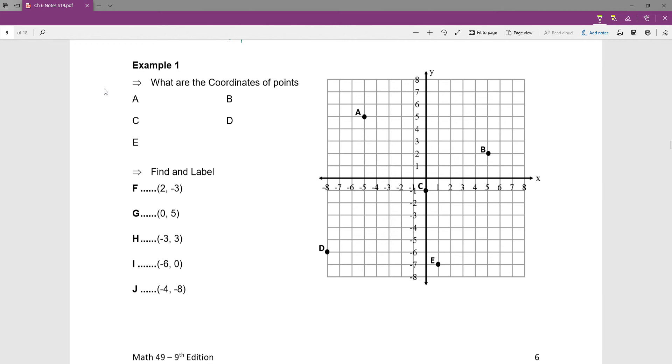And then we want to find and label the points that are given down below. So I'll just put my answers up and you can probably check as you go. It is a lot like playing Battleship. I think it's kind of fun, honestly. So those are the answers to the first part, finding the addresses of those letters on my coordinate plane.